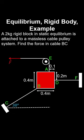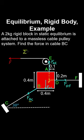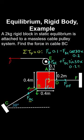A 2 kg rigid block in static equilibrium is attached to a massless cable-pulley system; we must find the force in cable BC. Taking a free body of the block, the force of weight acts through the centre of mass. To find force BC, take a sum of torques about the point where unknown forces intersect, so those forces produce no torque. By rotational equilibrium, the sum of torques about point P must be zero. Resolving forces into horizontal and vertical components and applying the right-hand rule gives the torque contributions, from which we solve for the force in cable BC.